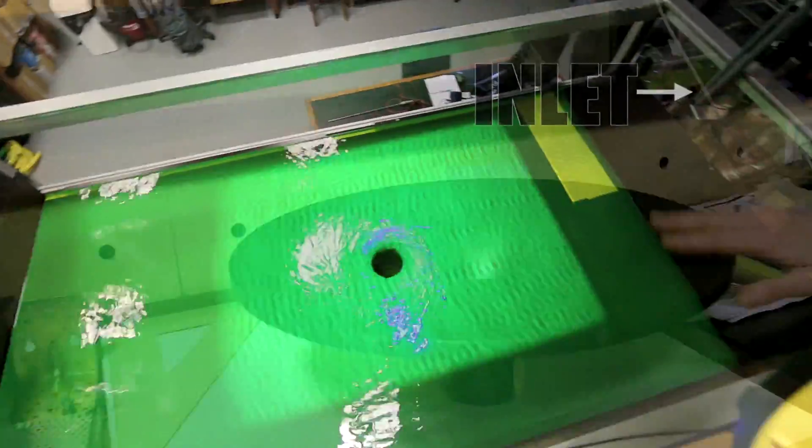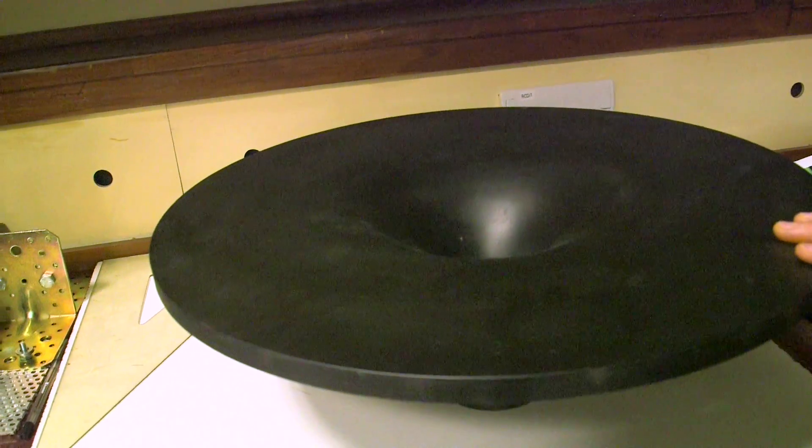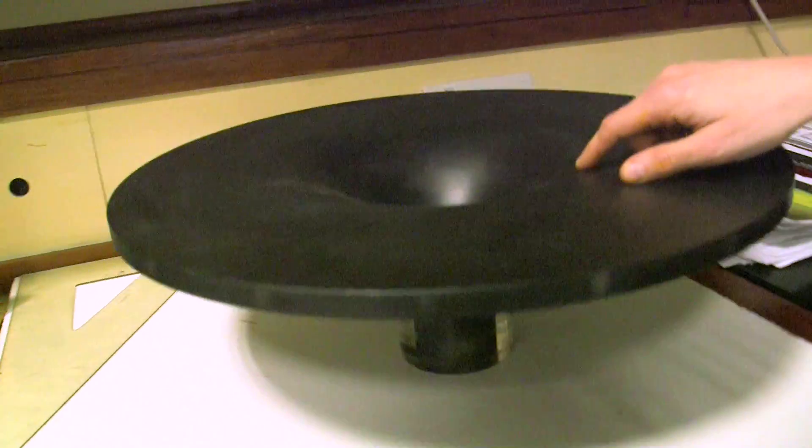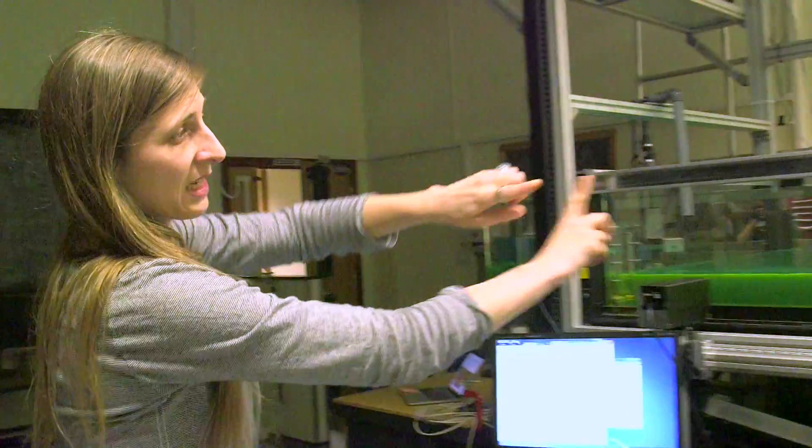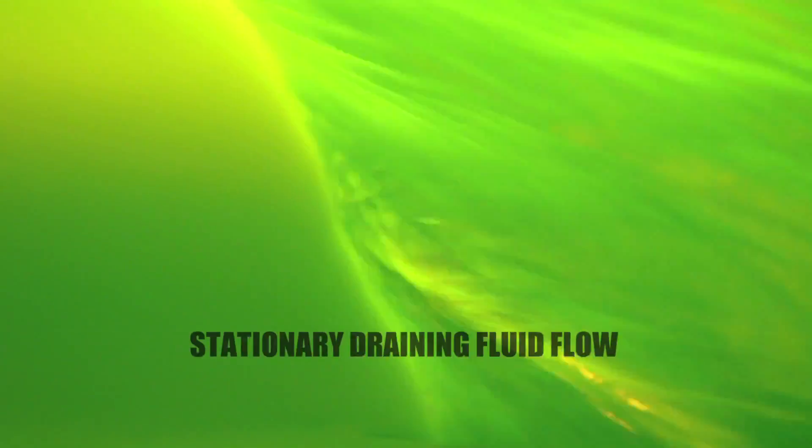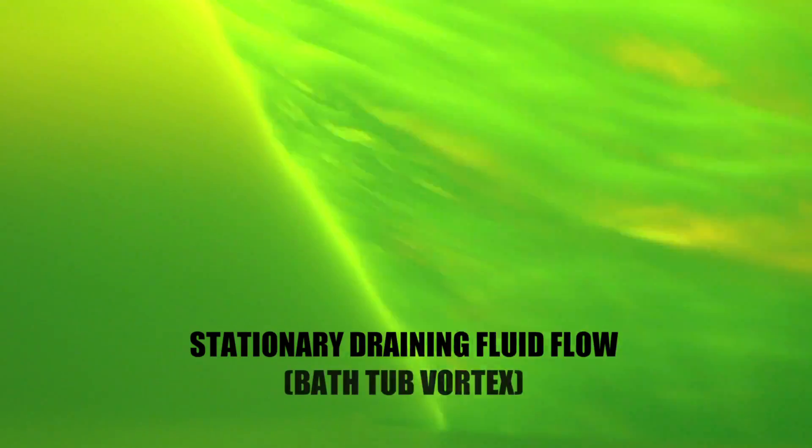And then what we have, we have a hole in the center. These are exchangeable center holes. The water is coming in, and because of the way we feed it, it starts spinning, and it's draining in the center. So it's a stationary draining fluid flow or just a vortex flow.